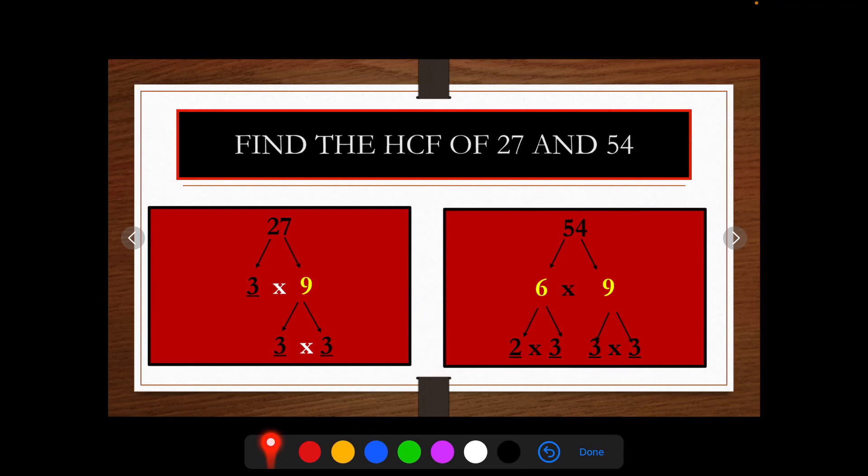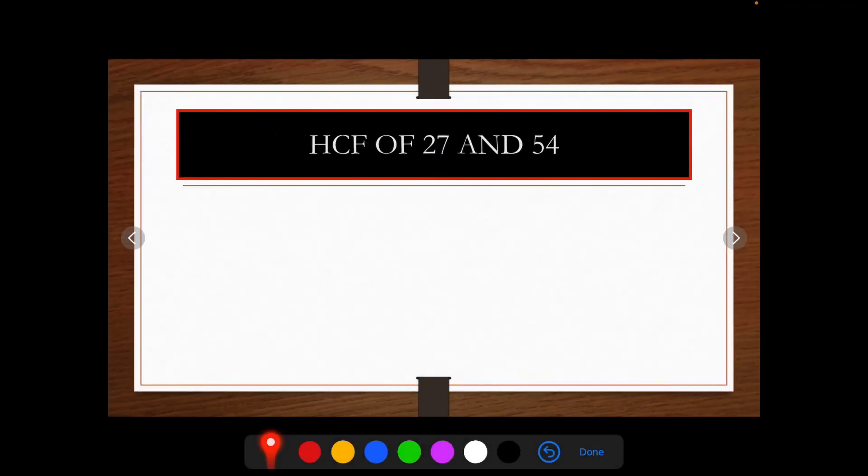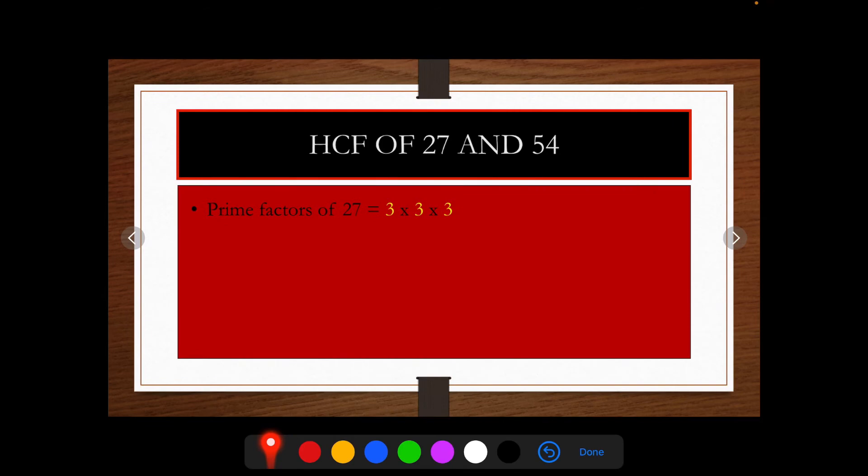Let us write its prime factors. Prime factors of 27 are 3 multiplied by 3 multiplied by 3. It means 3 times 3 equals 9, 9 times 3 equals 27. Prime factors of 54 are 3 times 3 equals 9, 9 times 3 equals 27, and 27 times 2 equals 54.